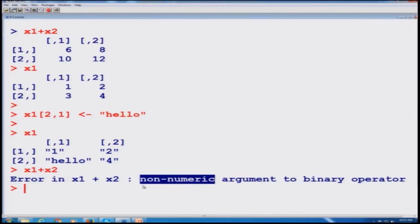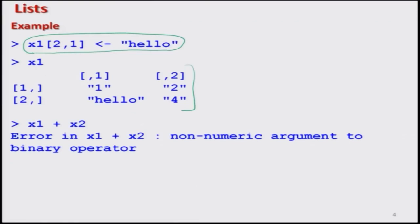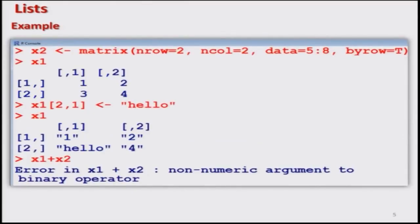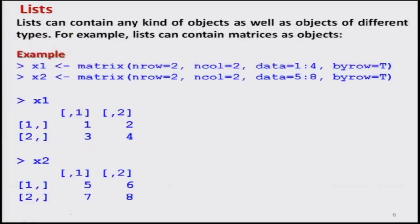Now you can see that in some situations you need a matrix or arrangement of data that can contain all sorts of information, whether in the form of character or number. In the next slide I have given a screenshot of this outcome. We have replaced a number by a character and then we have a different type of data structure — one that contains some numbers as well as a character called 'hello'. Let us now try to understand more about this list by going through the same example.